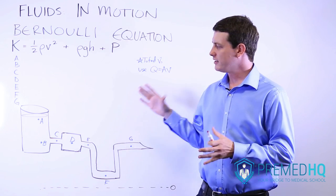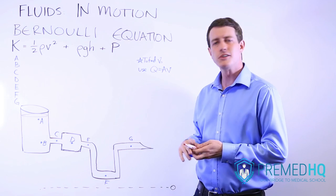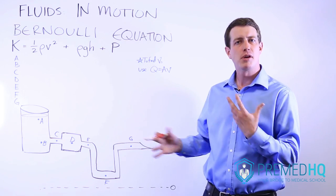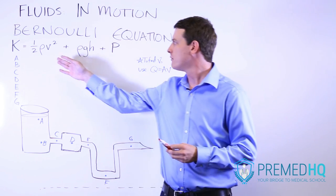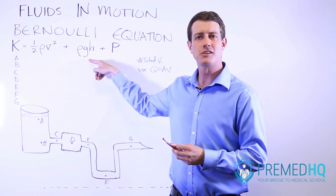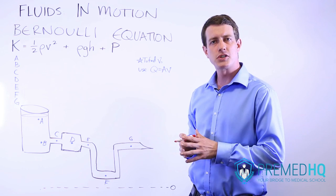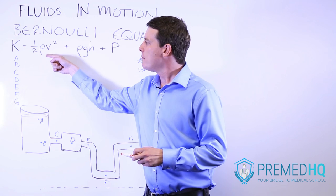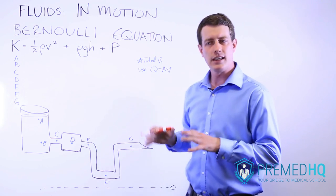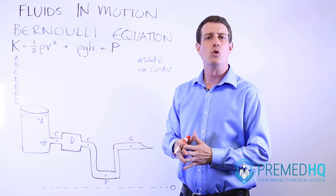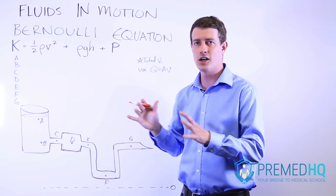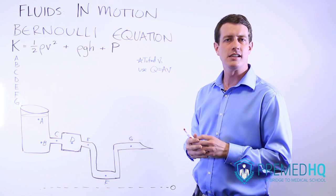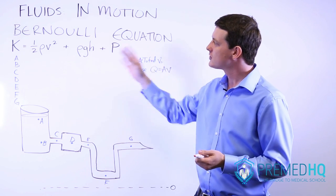We've drawn out an example of a pipe-type system that a fluid is traveling through. We can use Bernoulli's principle to understand what's happening to the kinetic, gravitational, and pressure components as it moves through the system. Note that density rarely changes when dealing with water or flowing liquids — as you'll usually encounter on the MCAT. It's possible with air to have compression, but far more likely you'll have a constant-density liquid like water.